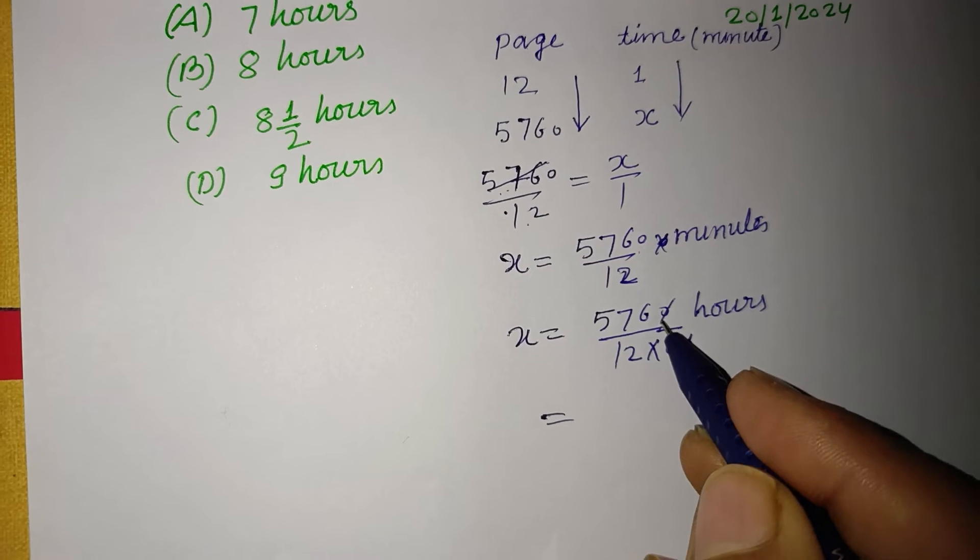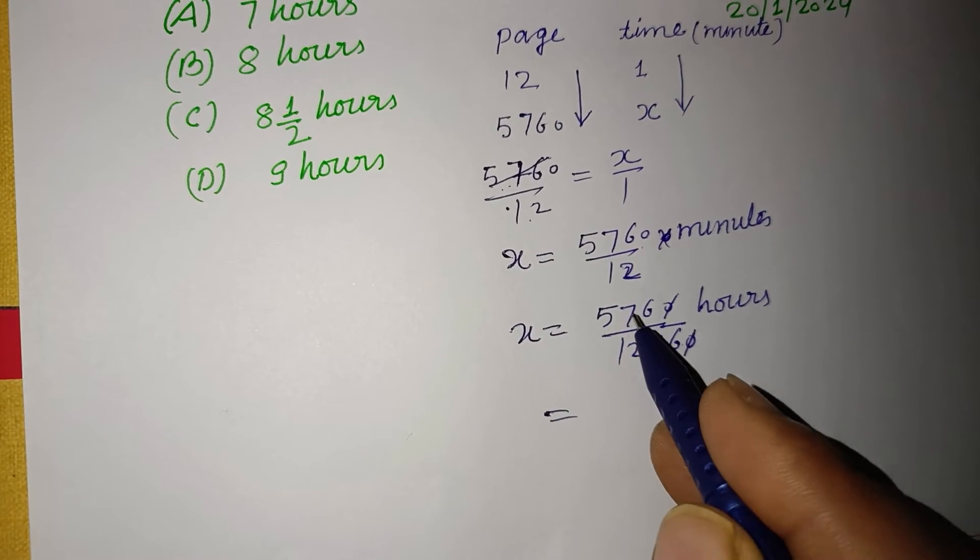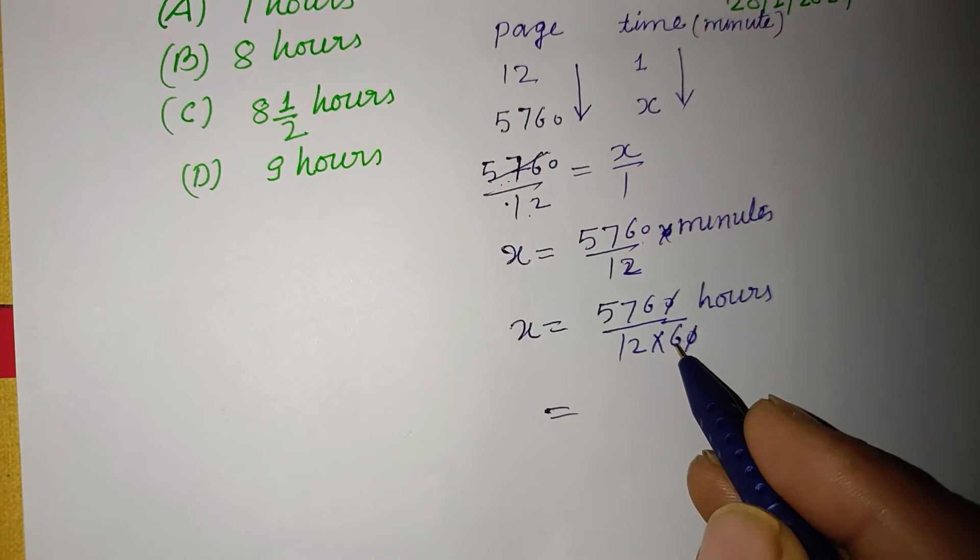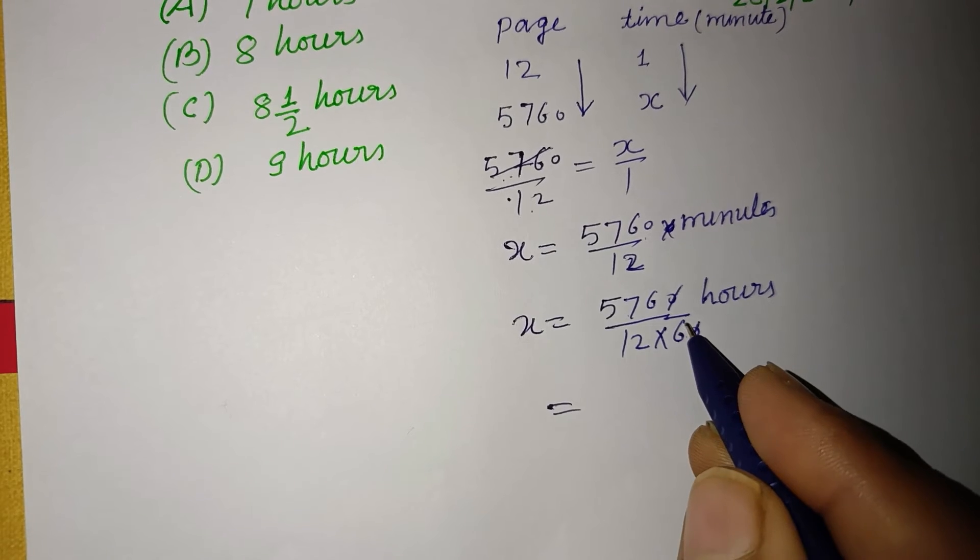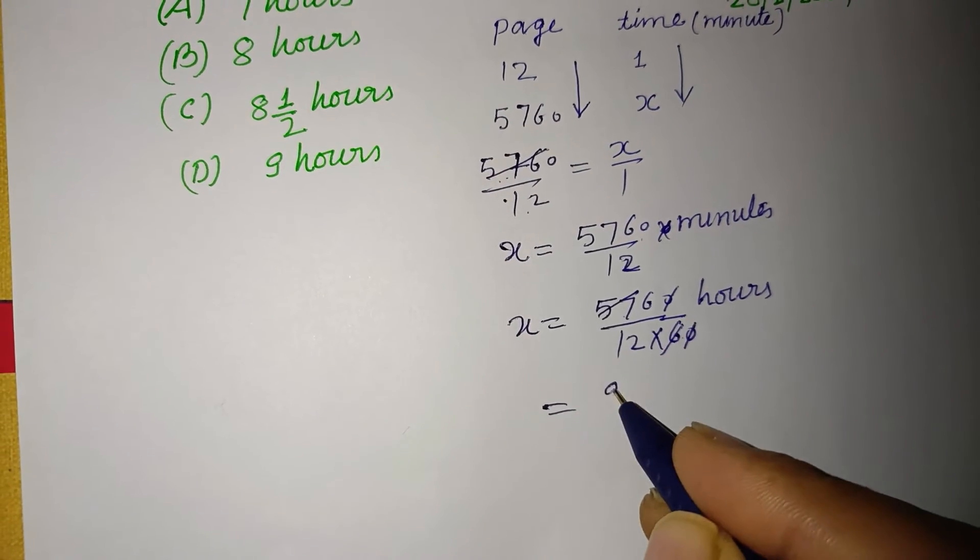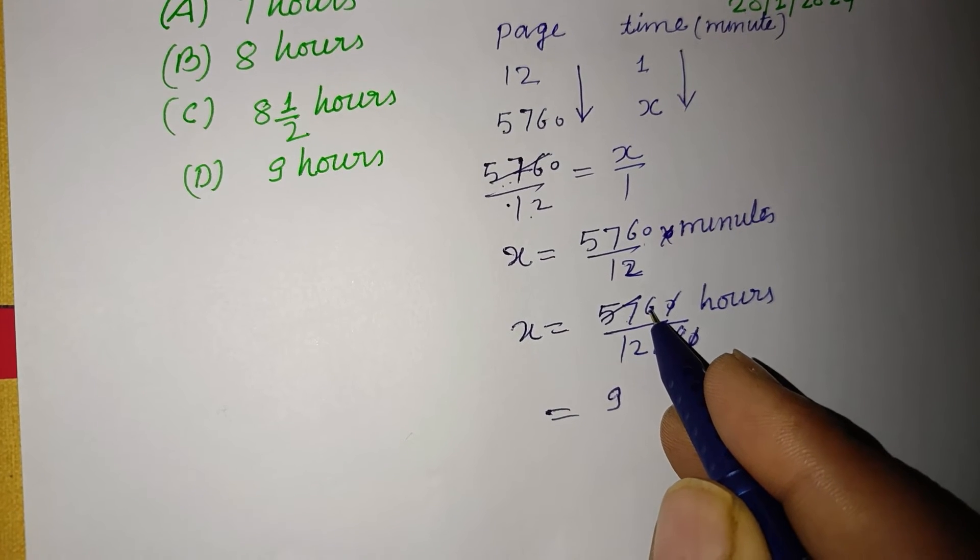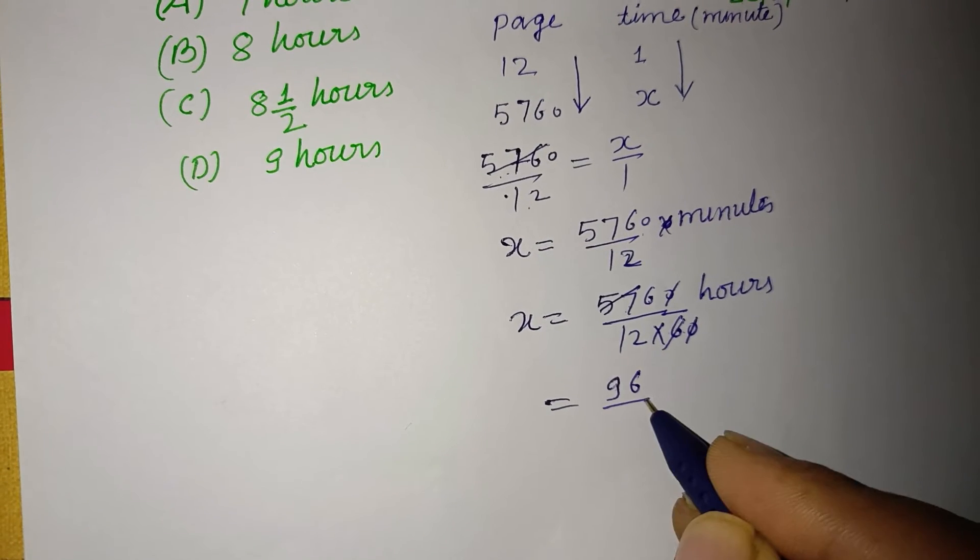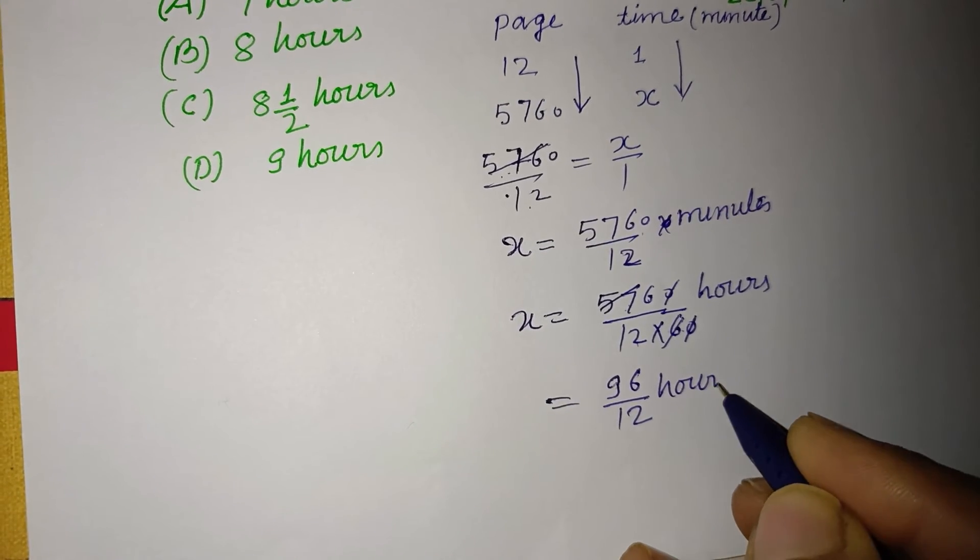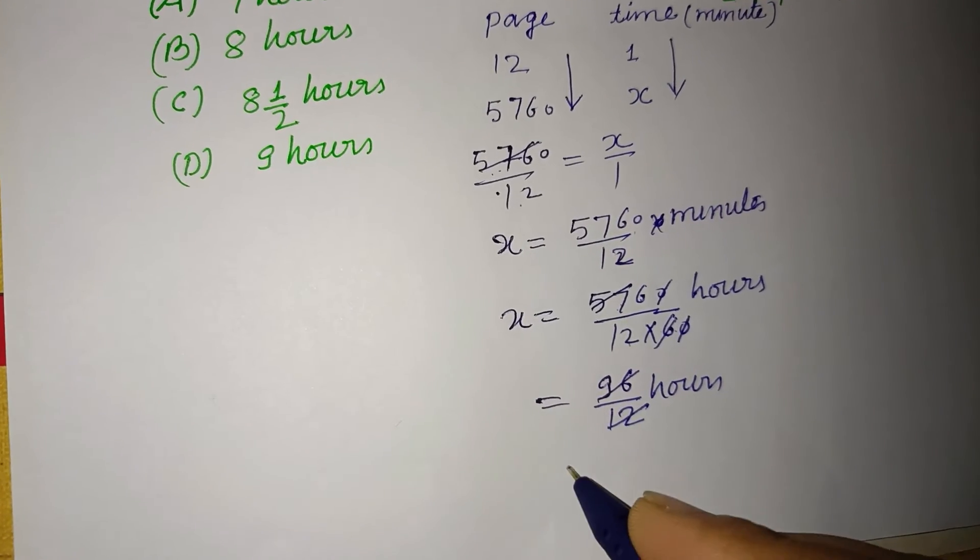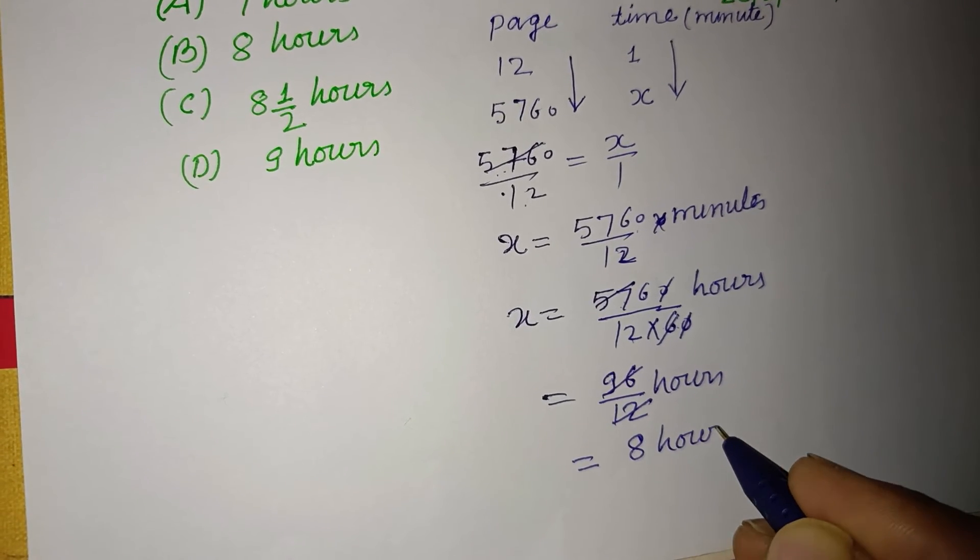So now, 0, 0 cancel. Here. 6, 9ja 54. 6, 9ja 54. And now 3 remain. 36. 6, 6ja 36. So, 96 upon 12 hour. And 12, 8ja 96. So, this is 8 hour.